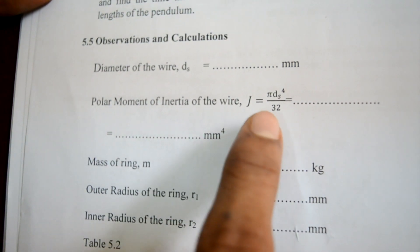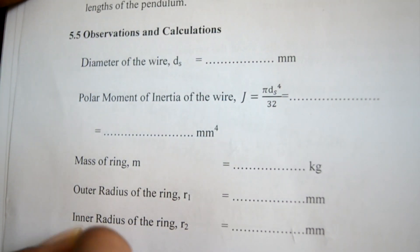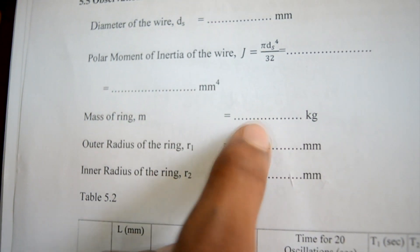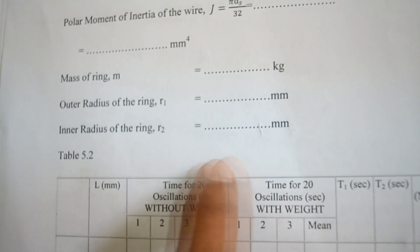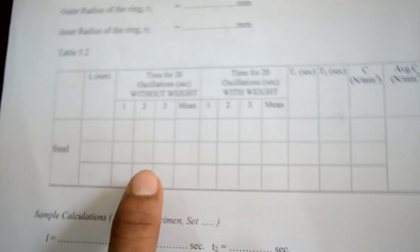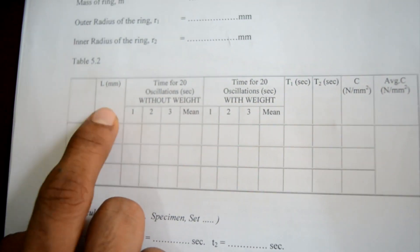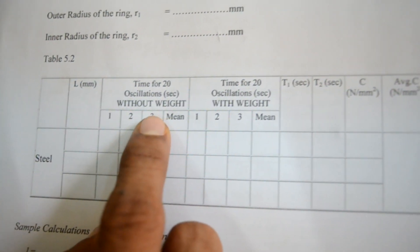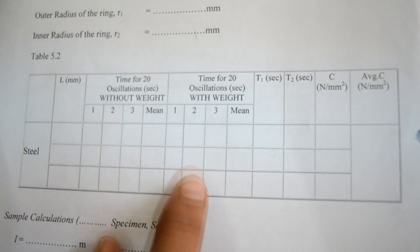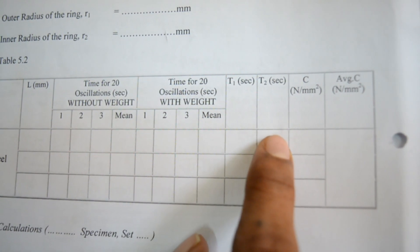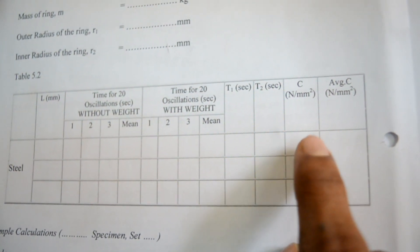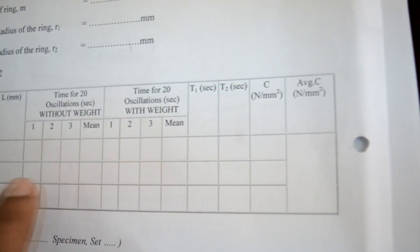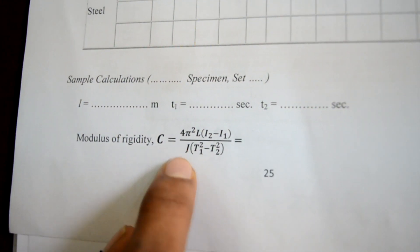The polar moment of inertia of the wire J = π·ds⁴ / 32, where ds is the diameter of the wire. M is the mass of the ring. R1 and R2 are the inner and outer radii of the ring, used to find I2 − I1 = M(R1² + R2²) / 2. In the observation table, the length L between the clamps is noted first. Then the time for 20 oscillations without the ring and with the ring is recorded for 3 values of wire length. T1 and T2 are found, and C is calculated as 4π²·L·(I2 − I1) / [(T2² − T1²)·J]. The experiment is done for 3 lengths and the average value is taken as the modulus of rigidity in Newton per millimetre squared.